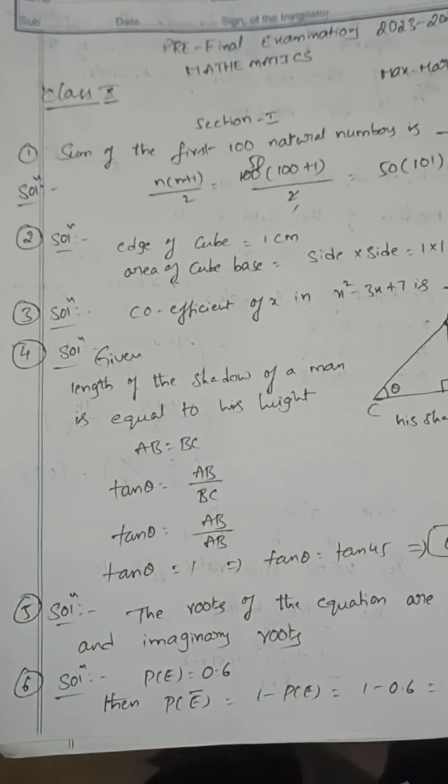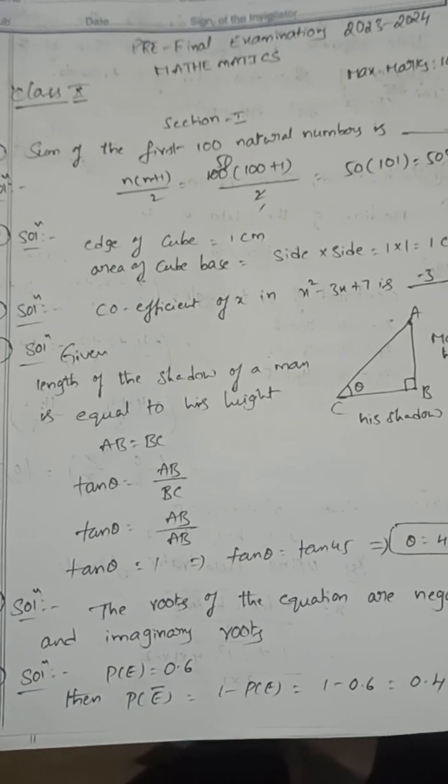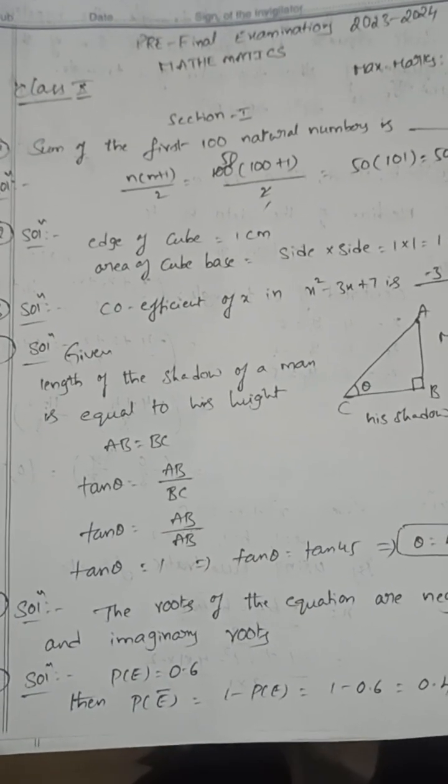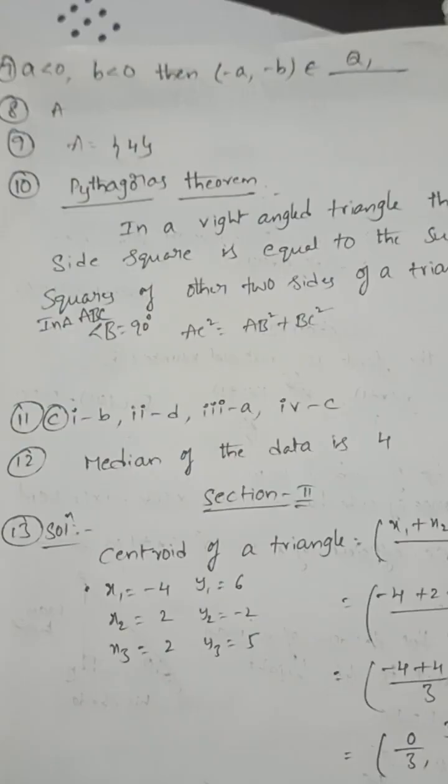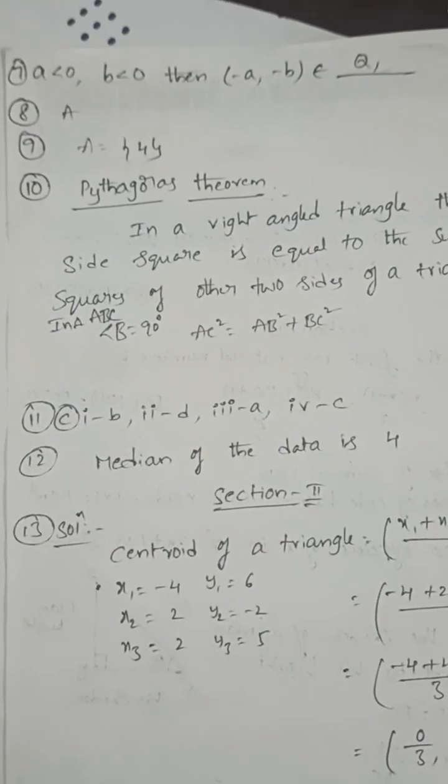Next, P(E) = 0.6. Then P(E̅) = 1 - P(E) = 1 - 0.6 = 0.4.